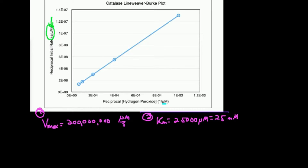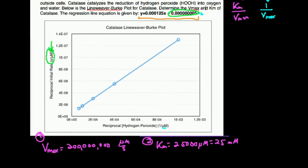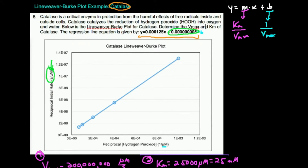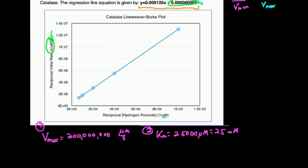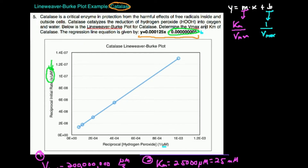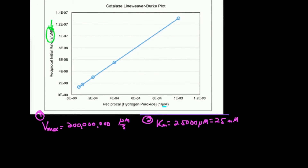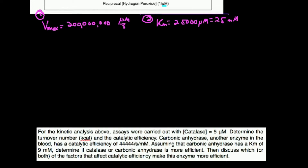We're going to calculate those in this video, and then we have some follow-up conceptual questions, test-caliber questions for you. Going back to the last video, I always calculate Vmax first. Vmax is the reciprocal of the y-intercept — whatever B is, take the reciprocal of that. To find the Km, take the slope (0.000125) and multiply by the Vmax. Now I want to calculate the Kcat, and that's going to be step three.